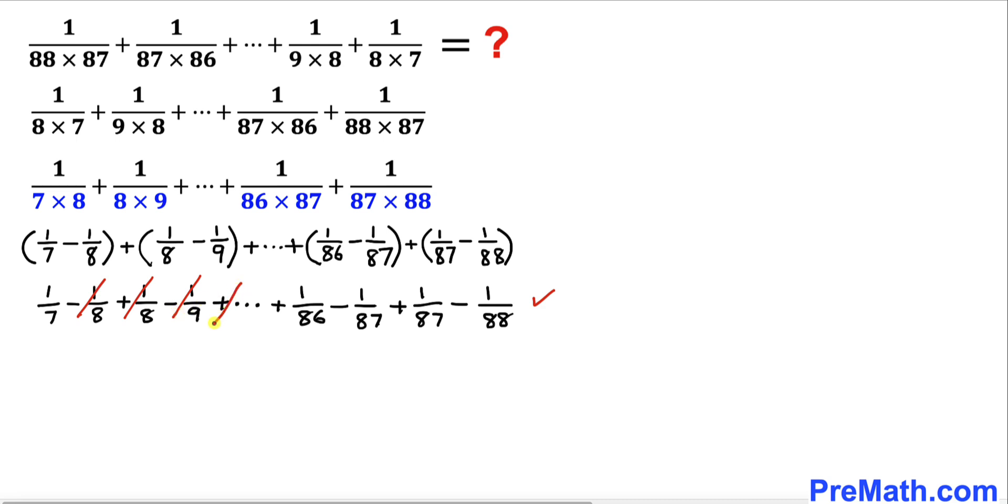Likewise, these terms cancel. Finally, negative 1 over 87 and positive 1 over 87 cancel. Everything collapses except the very first term, 1 over 7, and the last term, 1 divided by 88. This is called a telescoping series or collapsing series.